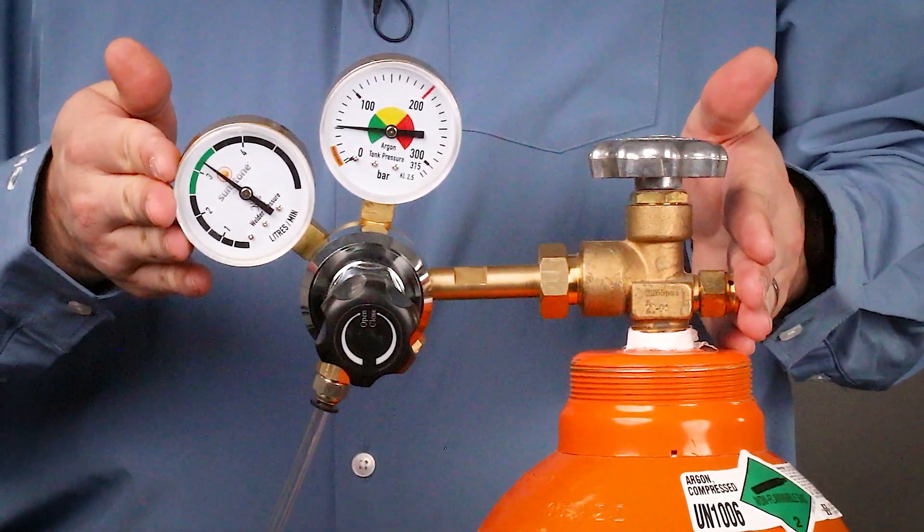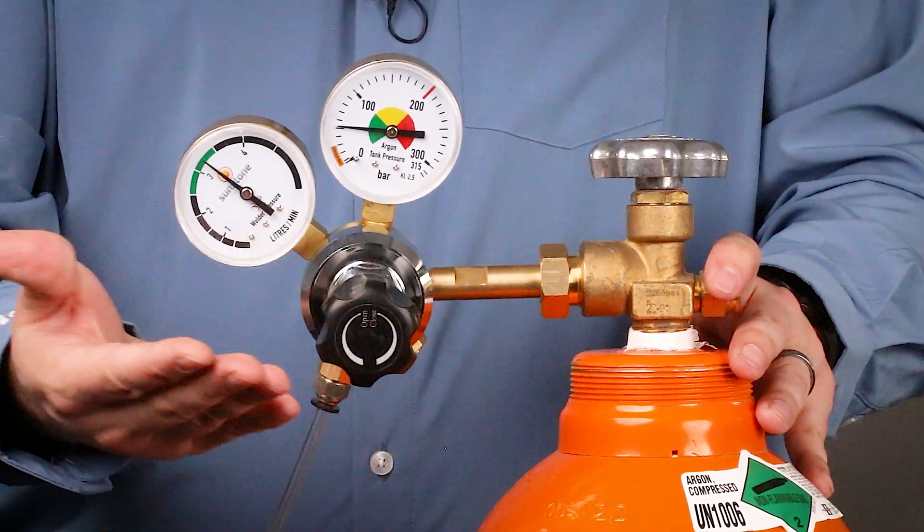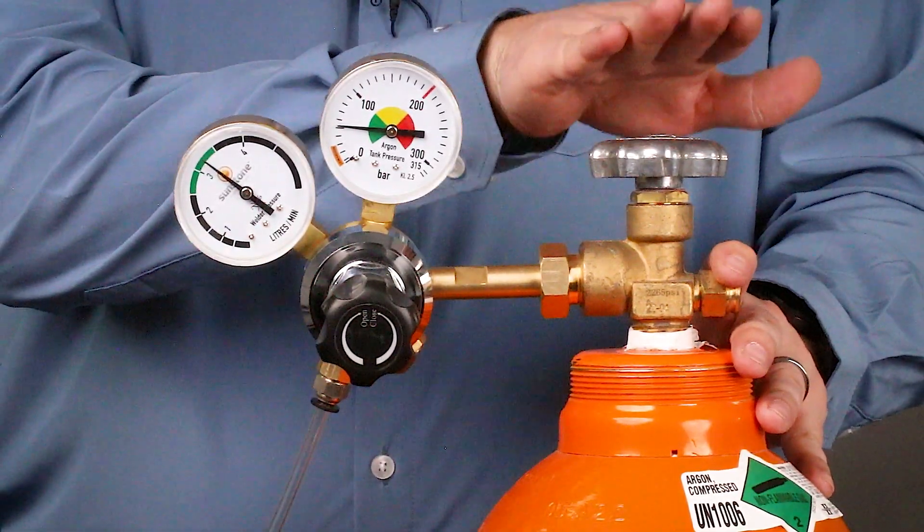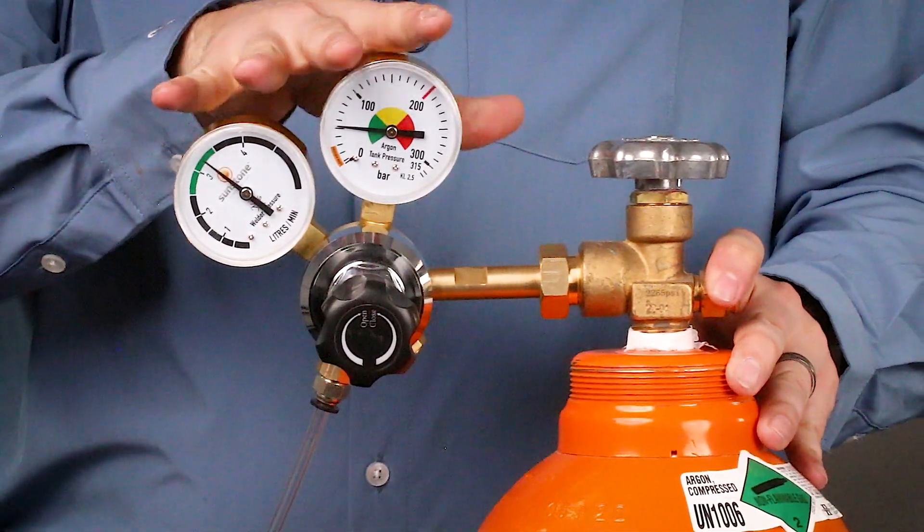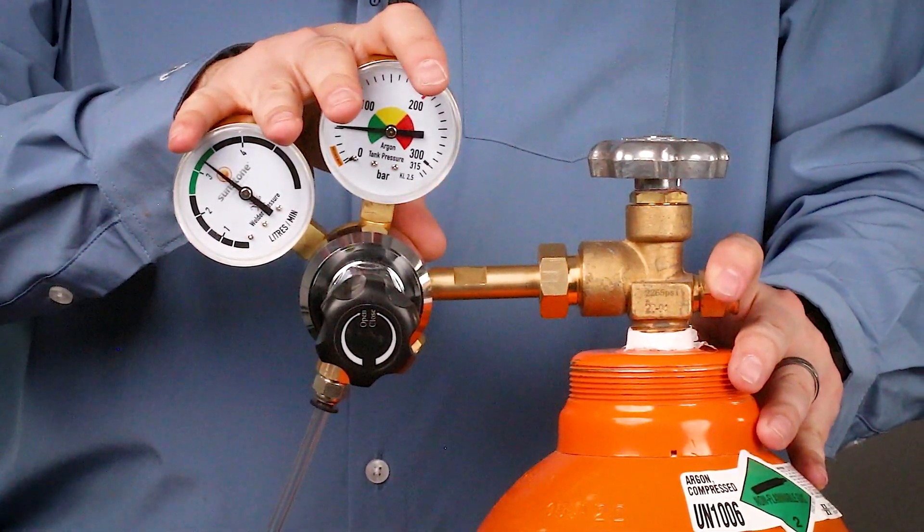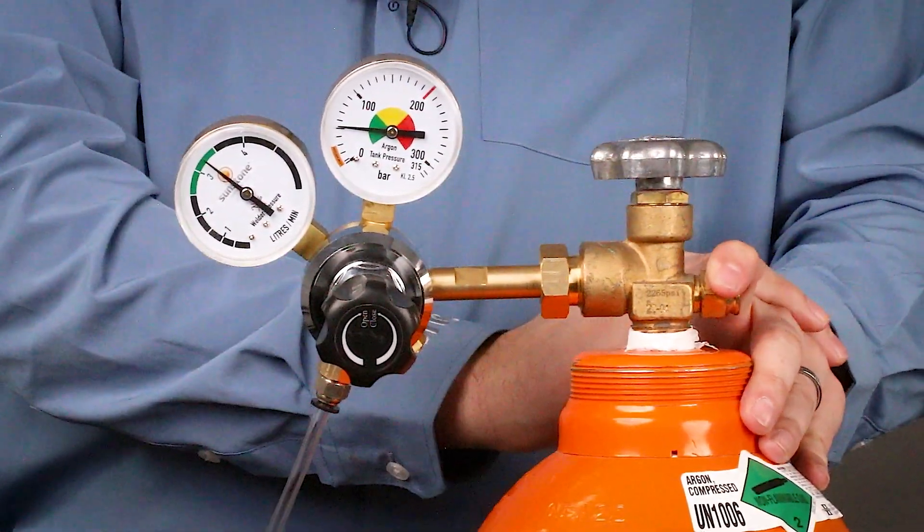We can leave our tank just like this and we don't need to touch this knob anymore. At the end of the day, we can simply close this tank valve and leave what's inside. At the beginning of the day, we can open up this tank again and start welding.